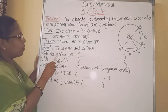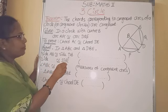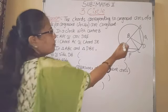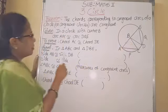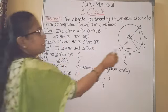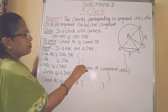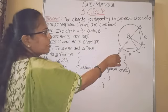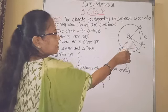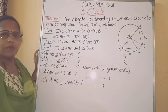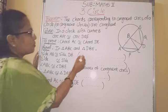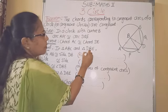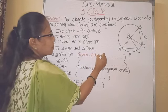Side AB is congruent to side DB. If you observe the figure, AB and DB are radii of the same circle. So, we write the reason: radii of the same circle.